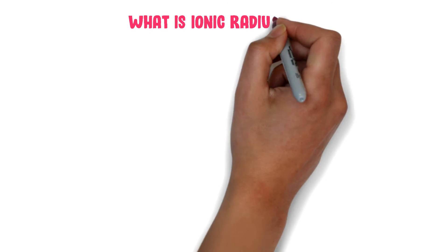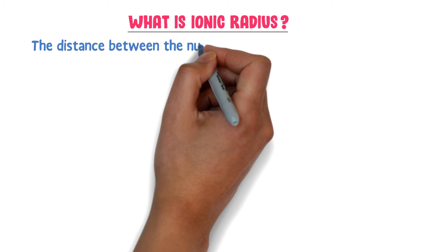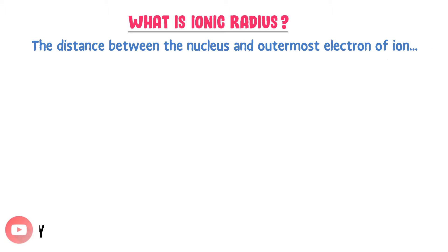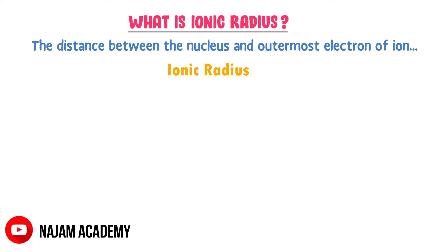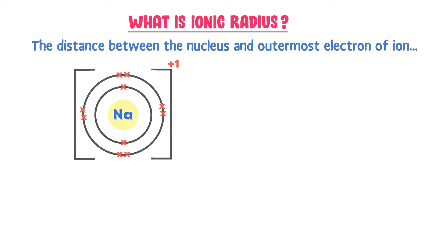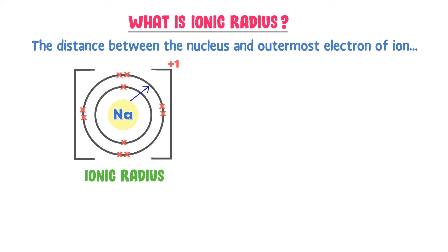What is Ionic Radius? The distance between the nucleus and outermost valence shell of an ion is called Ionic Radius. For example, consider the negative ion of sodium — this distance between the nucleus and outermost valence shell is called the Ionic Radius of Sodium.